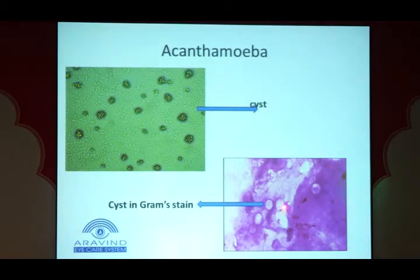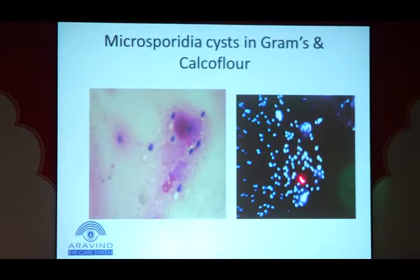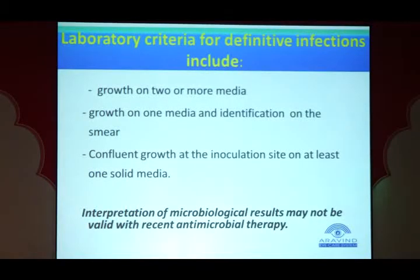Acanthamoeba is an organism general microbiologists rarely encounter — it is seen primarily in eye infections. The cysts must be recognized and differentiated from other epithelial cells. Microsporidia is another organism now becoming endemic, seen throughout the year for the last five years at our institute, not just in outbreaks. The criteria for reporting a significant organism are: growth on two or more media, growth on one medium plus identification on smear, or heavy growth at the inoculation site.